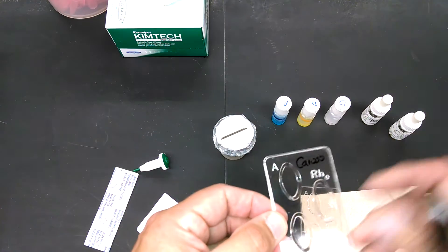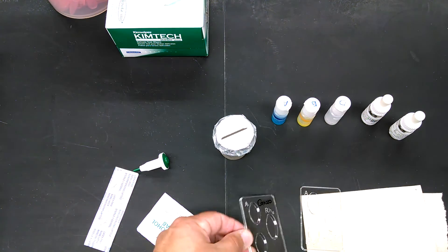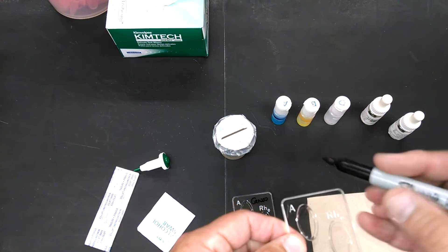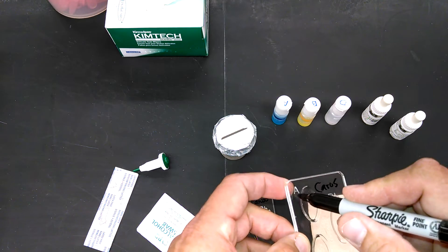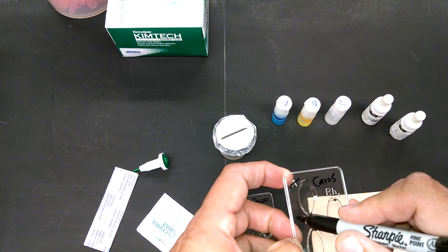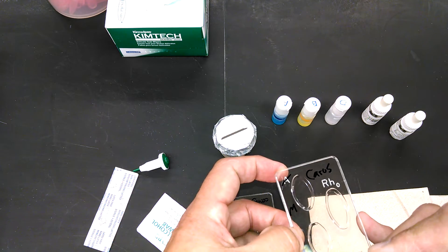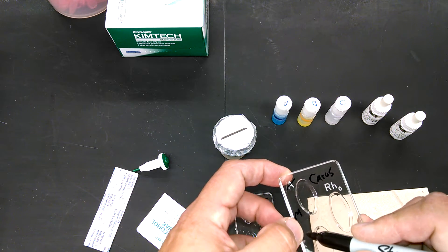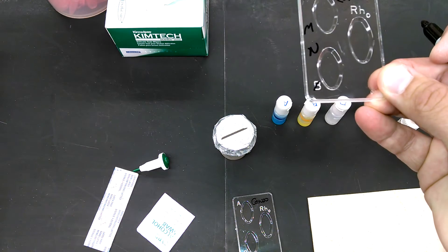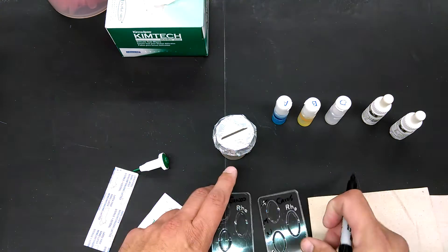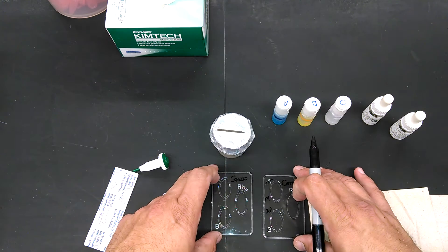Put your name on there, and then you've got your A, B, and RH. On the other one, again, your name, and then change one of them from A to M, and from B to N. So this is now MN. We've got our trays ready.